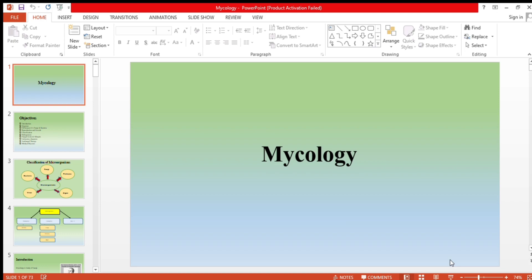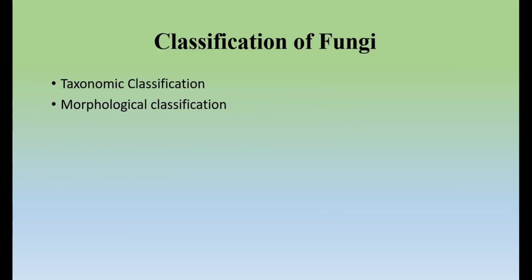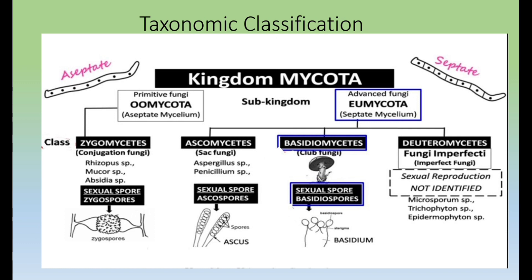The classification of fungi is divided into two categories: first is taxonomic classification and second is morphological classification. In the taxonomic classification we will discuss which kingdom fungi belongs to, and what are its sub-kingdoms, classes, and different species.